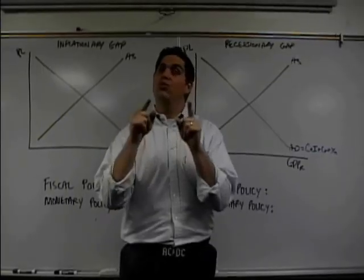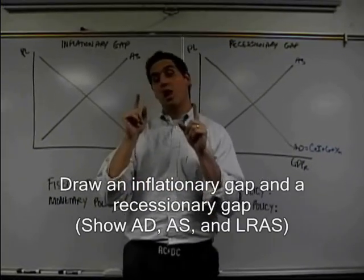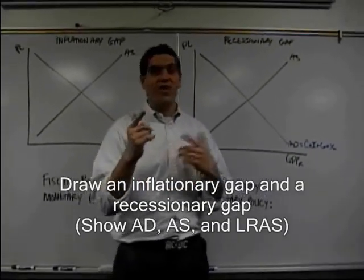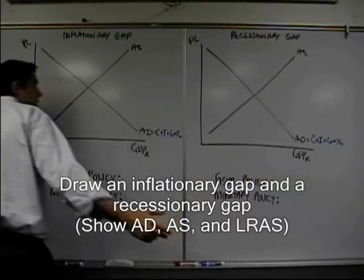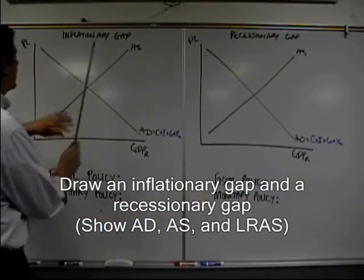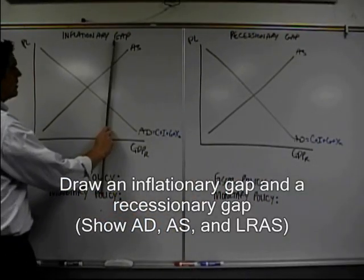But you're missing something and that's what you need to be able to draw. You need to be able to draw the long run aggregate supply curve, figure out where that thing goes. So I'm telling you right now, the long run aggregate supply curve is going to go in the middle, on one side or the other side.